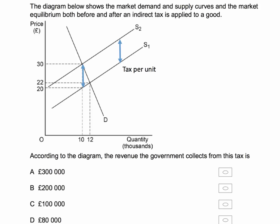Let's go back to our question. Here's the tax per unit — that's the vertical distance between the two supply curves — and you can see that the tax is actually £10 per unit. The price has gone up by £8, so the consumer is paying that portion, and the producer has to absorb £2 of the £10 tax.